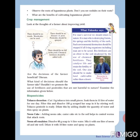Let's see what bio-pesticides are. The first one is tobacco decoction. Cut 1 kg tobacco into small pieces and soak them in 15 liters of water for one day. Filter this and dissolve 100 grams of grape bar soap in it by stirring well — tobacco pesticide is ready. Dilute by adding double the quantity of water and spray on plants.